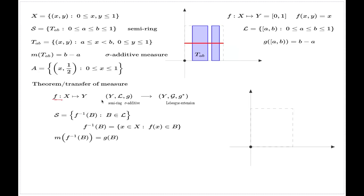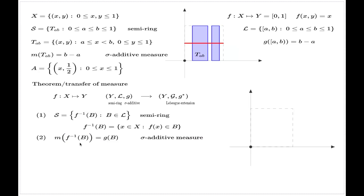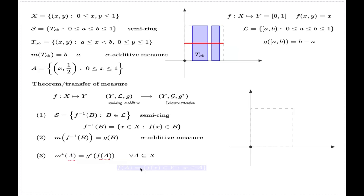We look at a general function between two universal sets, assume we have a semi-ring and a sigma-additive measure on Y, assume we have a Lebesgue extension for that, and then construct the new objects S and the transferred measure on X. The theorem claims that S will be a semi-ring and the transferred measure will be sigma-additive on this semi-ring. Furthermore, the theorem claims that the outer measure of any subset A of X equals the outer measure of the image of A in Y.